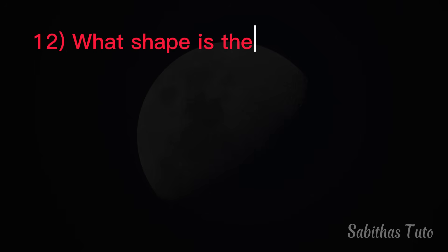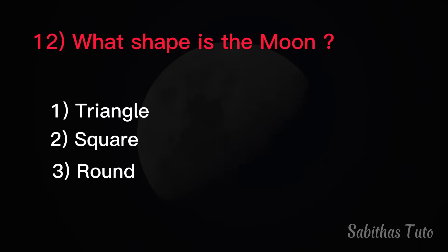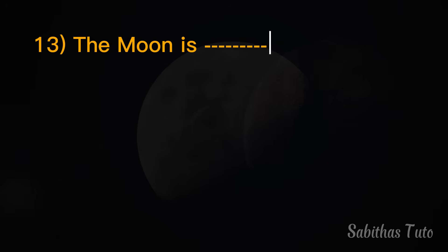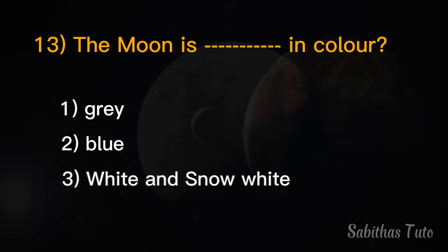Twelfth question. What shape is the moon? The answer is round. Thirteenth question. The moon is what color? The answer is white, or snow white.